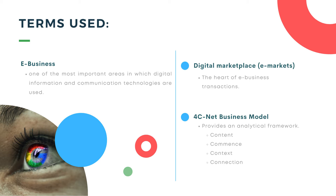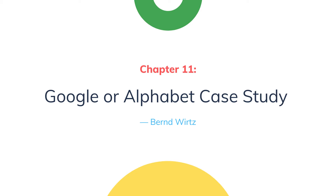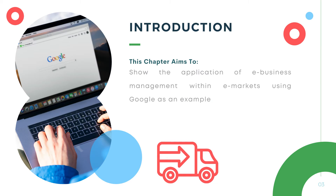And lastly, the 4C Net Business Models. It provides an analytical framework and has four dimensions — the four Cs: content, competence, context, and connection. Here is an overview of our presentation for today. Let's begin with Chapter 11, the Google or Alphabet Case Study. This chapter is to show the application of e-business management within e-markets using Google as an example.